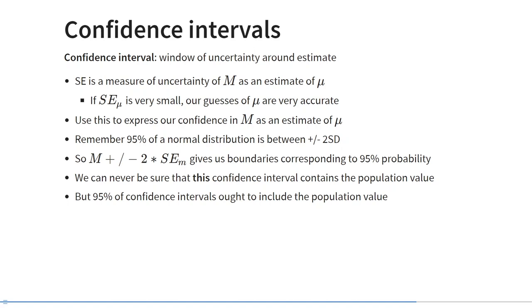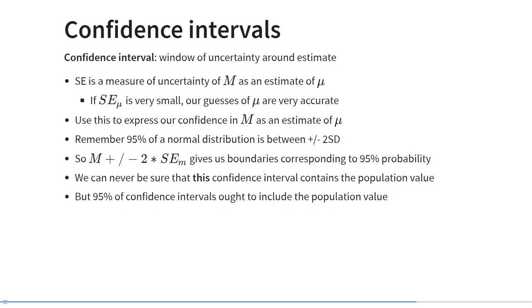We use the standard error to calculate it because the standard error is our measure of uncertainty about the statistic as an estimate of the population parameter. Remember that if the standard error is very small, then our guesses are very accurate, so this window is going to be very narrow. And if our standard error is large, then our guesses are very imprecise, so this window is going to be very large too. We use probability calculus to decide exactly how wide this window should be. Remember that 95% of a sample is between plus and minus two standard deviations — this is a very common probability to use for a confidence interval. So most often we report 95% confidence intervals, and then we say that this is an interval that contains the population parameter with 95% probability. And remember that we're talking about long-run probability: if we would draw 100 samples from the population and calculate 95% confidence intervals in those 100 samples, 95% of them would contain the population value.